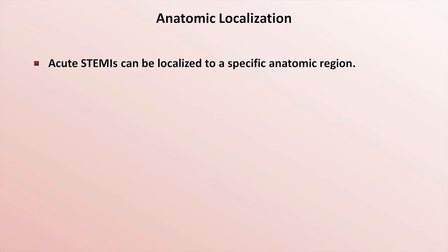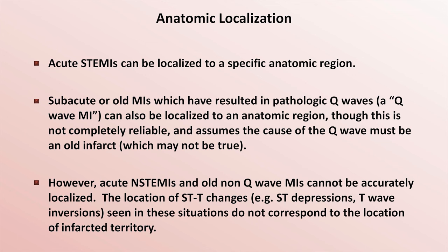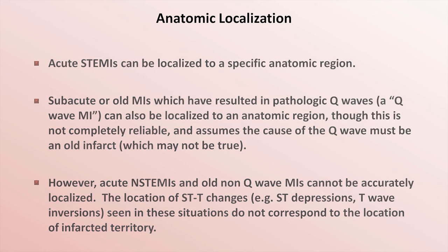Beyond temporal localization, MIs can often also be anatomically localized. Specifically, acute STEMIs can be localized to a specific anatomic region. Subacute or old MIs which have resulted in pathologic Q-waves can also be localized to an anatomic region, though this is not completely reliable. However, acute N-STEMIs and old non-Q-wave MIs cannot be accurately localized, because the location of ST depression and T-wave inversions in these situations does not correspond to the location of infarcted territory. To localize STEMIs and Q-wave MIs, we'll need to review some cardiac anatomy as well as revisit EKG lead groupings.